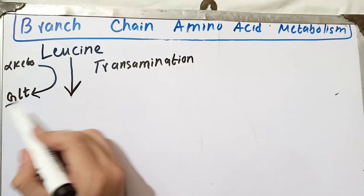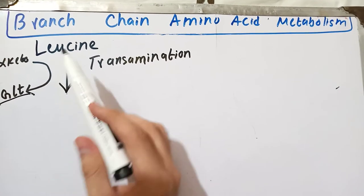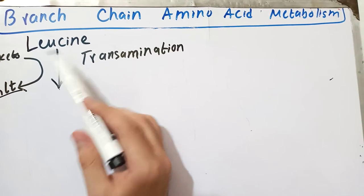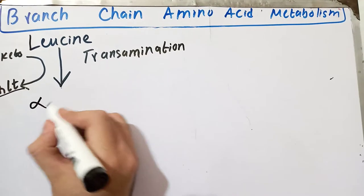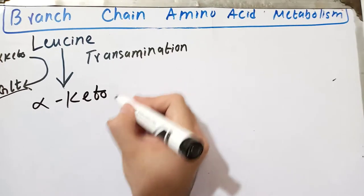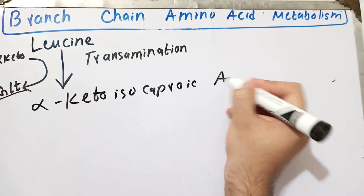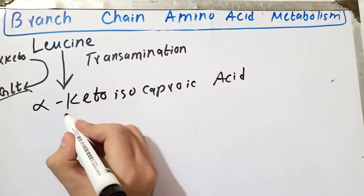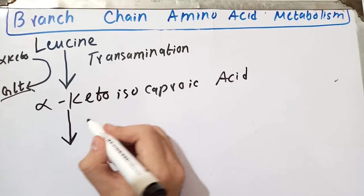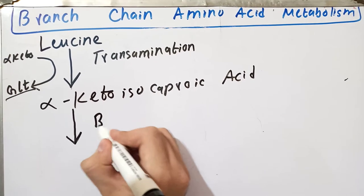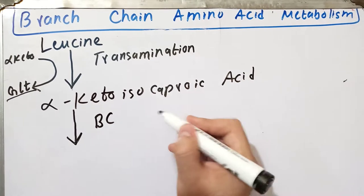The significance of the formation of this glutamate will be discussed later when we talk about the glucose-alanine cycle. The removal of the amino group from leucine will lead to the formation of a compound called alpha-keto isocaproic acid.